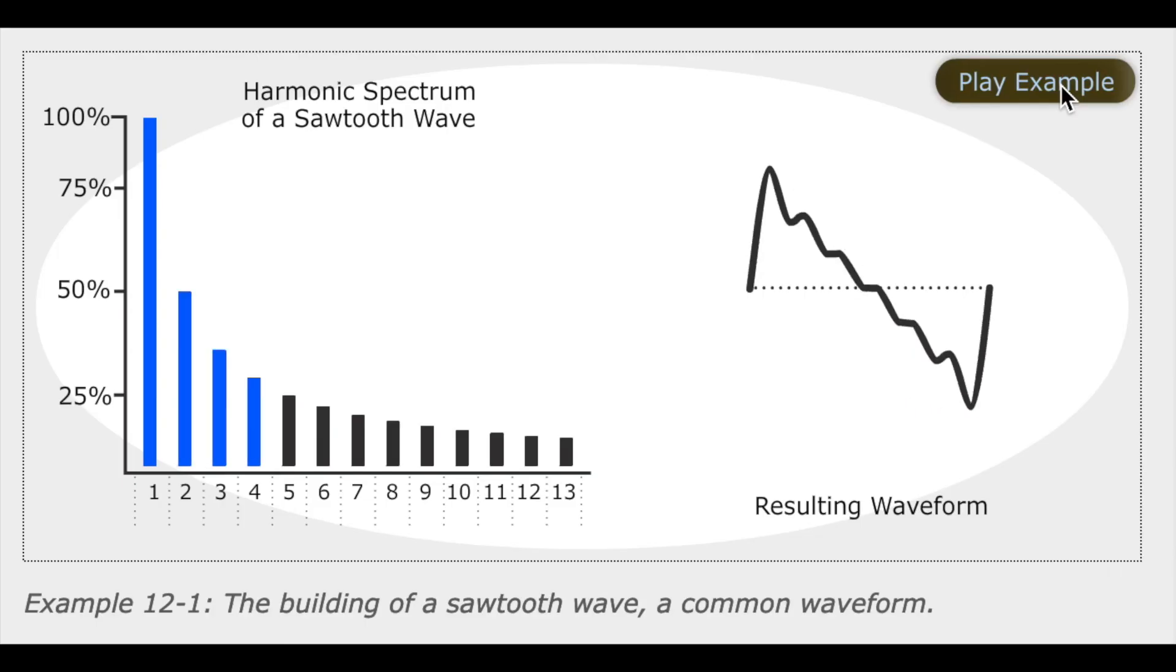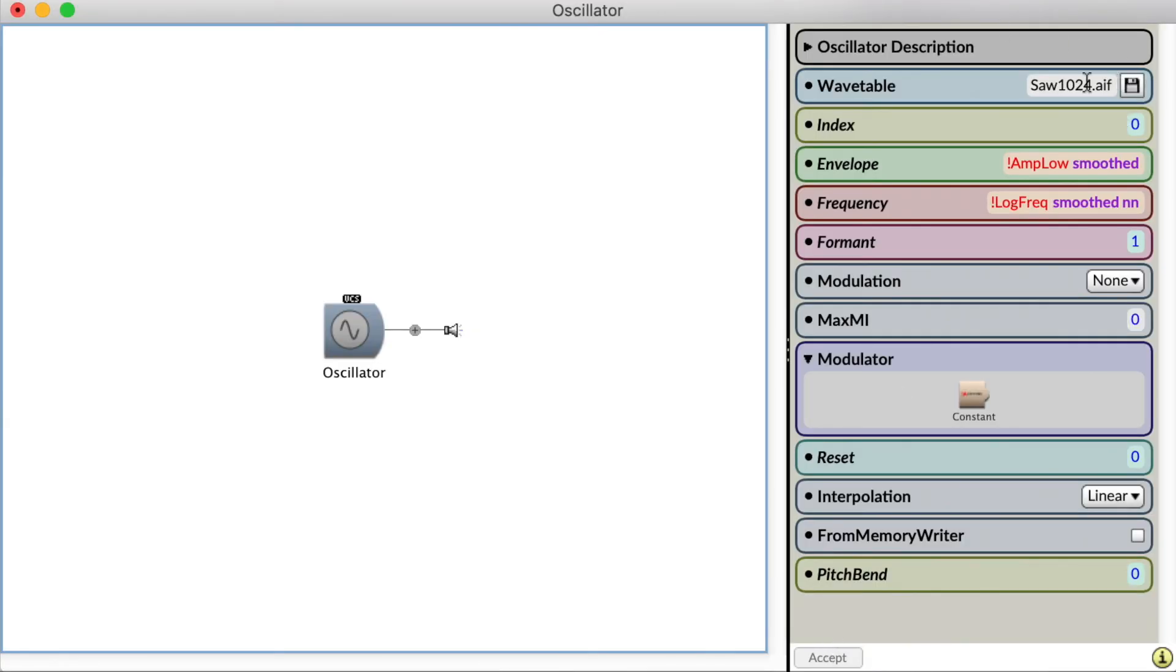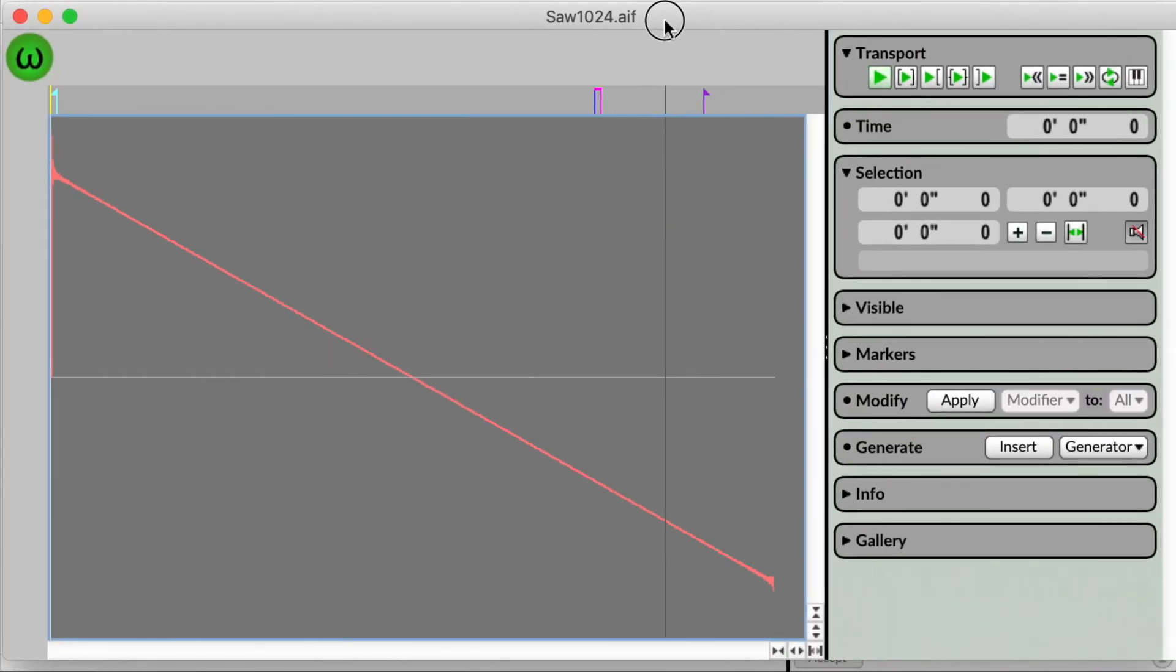Since we understand the harmonic makeup of a sawtooth wave, triangle wave, or square wave, we can produce them all through additive synthesis by combining sine waves together. But, probably that's not the most efficient solution. Digitally, it's going to be far more effective, for example, to have a sawtooth wavetable that we cycle through, rather than combining perhaps hundreds of sine waves to create that sawtooth wave.